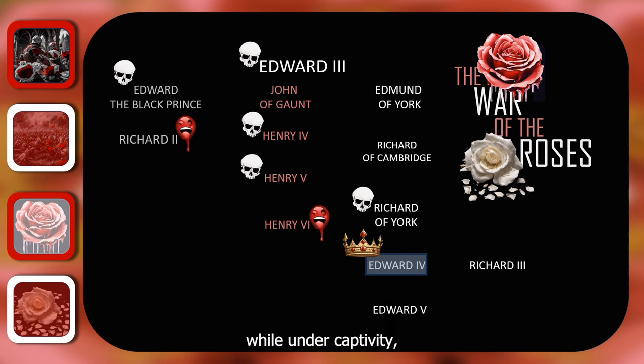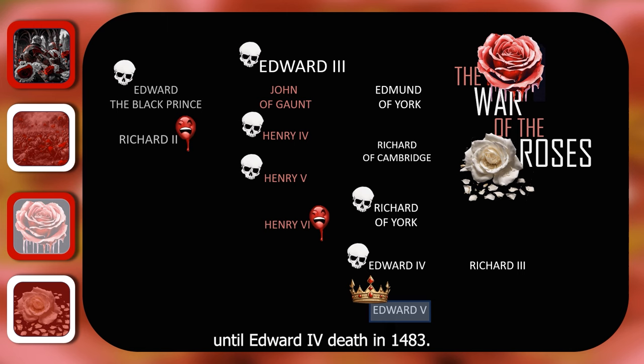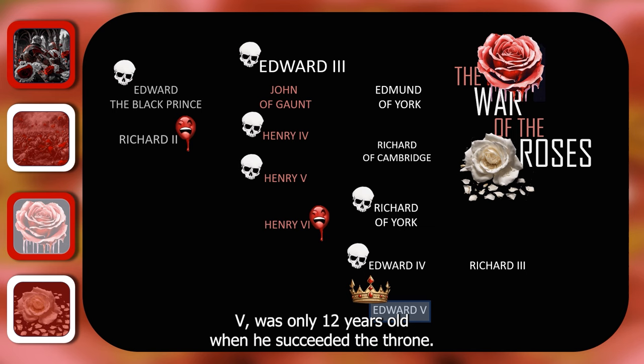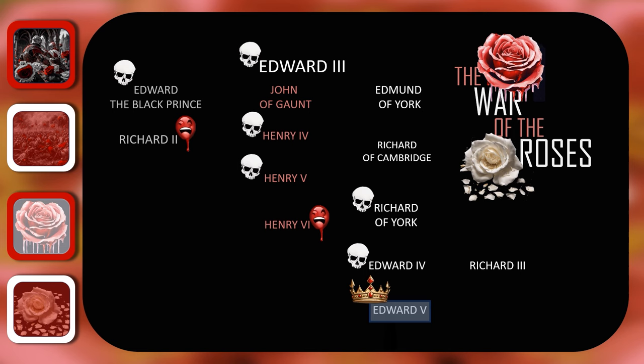There was a temporary peace until Edward IV's death in 1483. However, due to a bad stroke of luck, Edward had a number of daughters before he had two sons. Therefore, his son and heir, Edward V, was only 12 years old when he succeeded the throne. Once again, a regency council was established by the king's uncle — this time by Richard Duke of Gloucester, who would become the infamous Richard III.